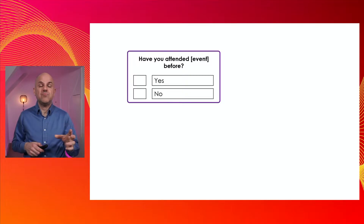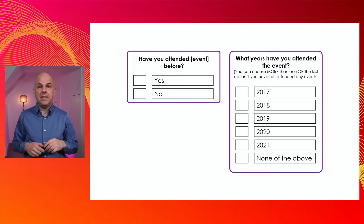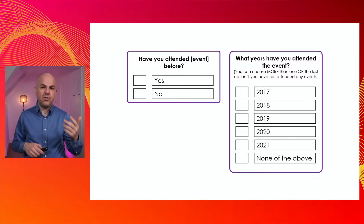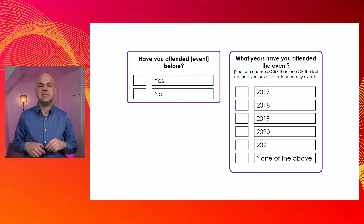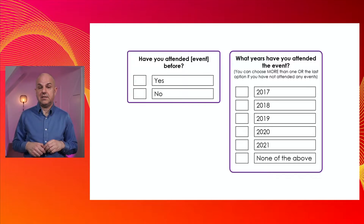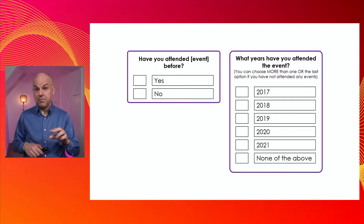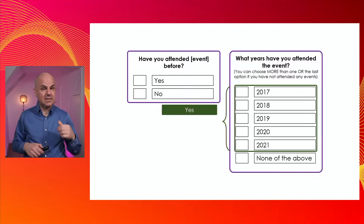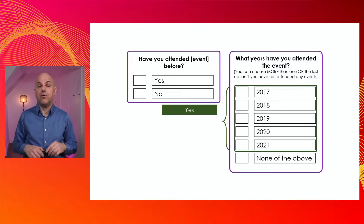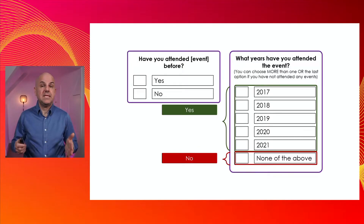We can actually ask the same question but withdraw more information out of it. The question would be reformulated to: what years have you attended the event? There are five options from 2017 to 2021, since the event started in 2017, plus an option for none of the above. From this we can still identify the yes — if they tick at least one box from 2017 to 2021, it means they attended before.